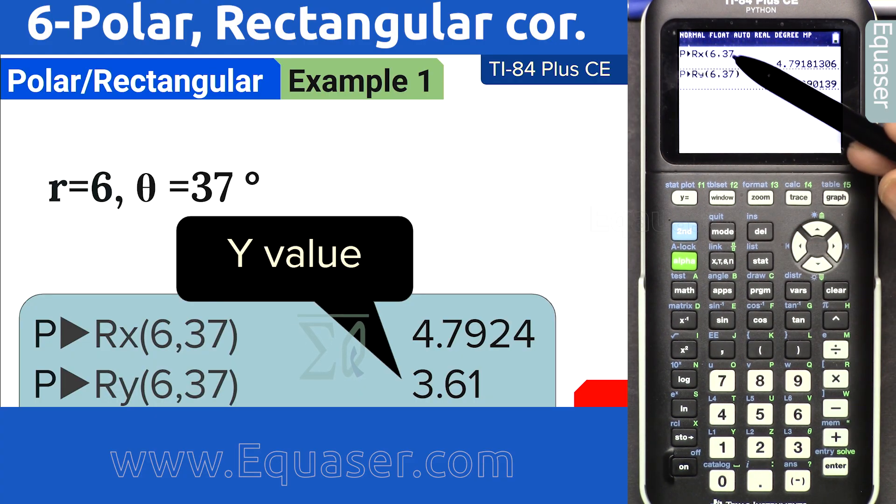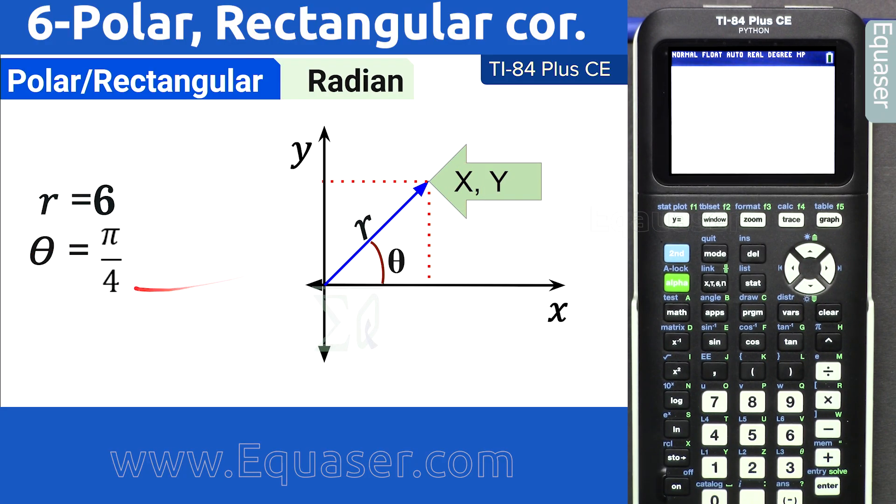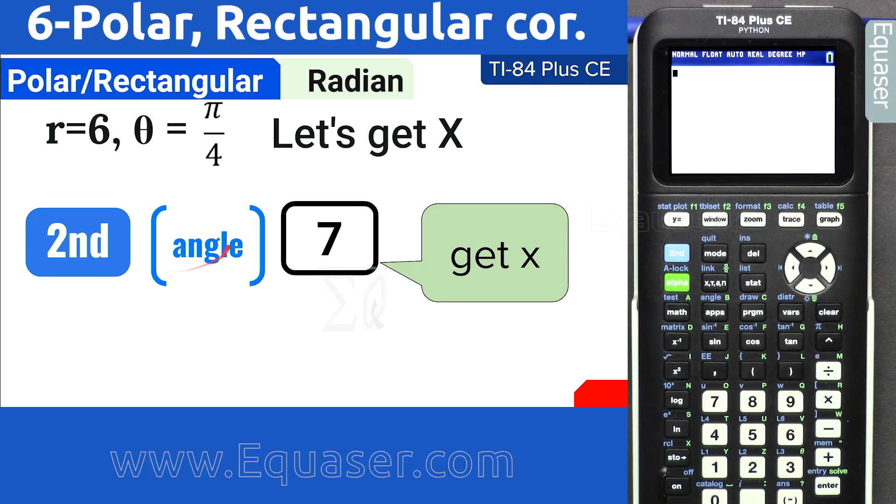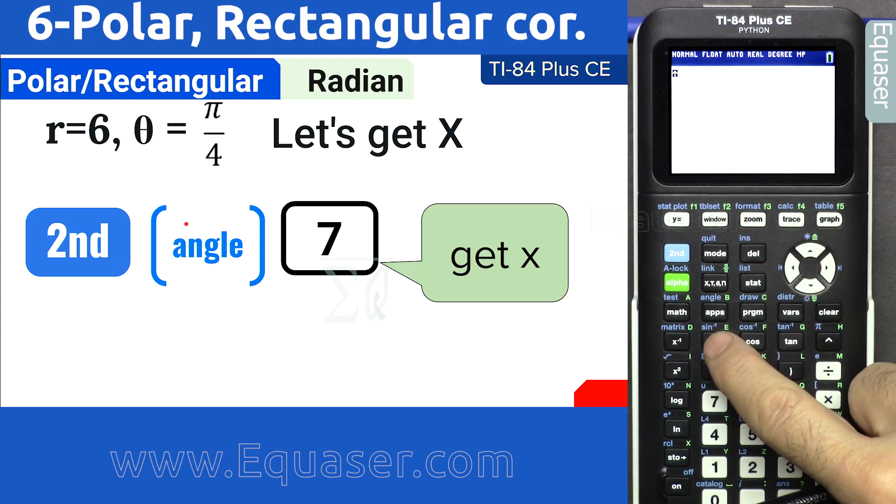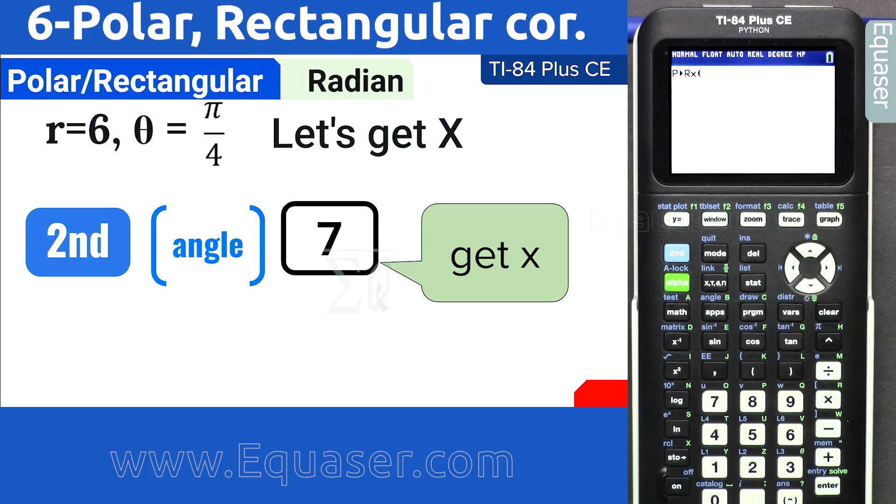So we converted polar to rectangular. Now let's have an example in radian: r is 6, theta is π over 4. We want to get x, and this is in radian. Let's see how we can convert it. Second function angle, 7 to get x.